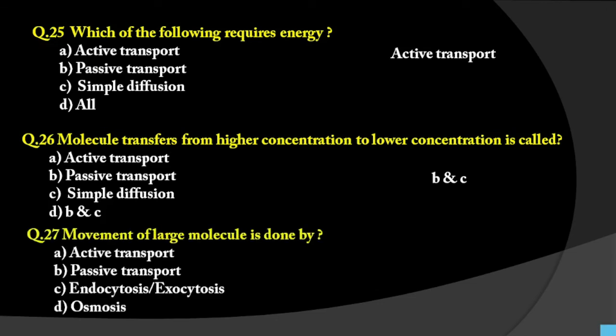Question number 27: Movement of large molecules is done by what? Options are active transport, passive transport, endocytosis or exocytosis, or osmosis. Active transport, passive transport, and osmosis transport small molecules. For large molecules, endocytosis or exocytosis is used. Endocytosis includes phagocytosis (cell eating) and pinocytosis (cell drinking). So the answer is endocytosis or exocytosis.